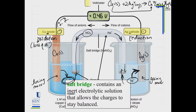The voltmeter — while not a required component — allows us to measure the energy of electron transfer across the wire, and we'll talk a lot about voltage as we go. Those are the components of the cell. The standard form is to draw the anode on the left and the cathode on the right when representing a galvanic cell.